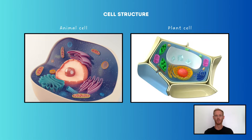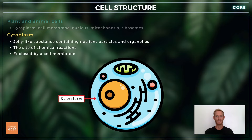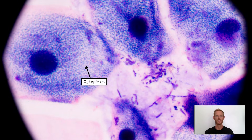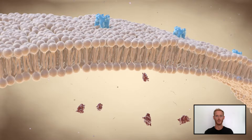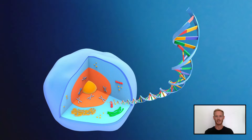Next, you need to be able to describe the structure of animal cells and plant cells and the functions of these structures. We'll begin with the structures that are common to both types of cells. The cytoplasm is a jelly-like substance containing nutrient particles and organelles, which are the components of cells that perform specific roles. It's the site of chemical reactions and is enclosed by a cell membrane. The cell membrane is a partially permeable layer that holds the contents of the cell in place and controls the movement of substances both into and out of the cell. The nucleus contains most of the cell's genetic material in the form of DNA, which is organized into structures called chromosomes. The nucleus essentially controls the cell's activities, which include cell development and division.